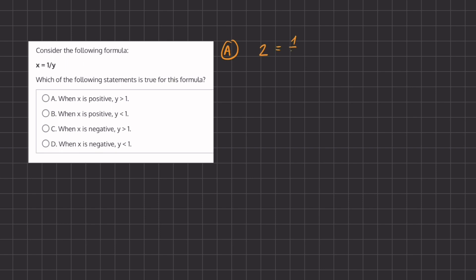We can flip both of them to isolate y and have its reciprocal, or we can multiply y on both sides, and we have 2y equals 1, and we can isolate this y by dividing 2 on both sides, and now we have y equals half.